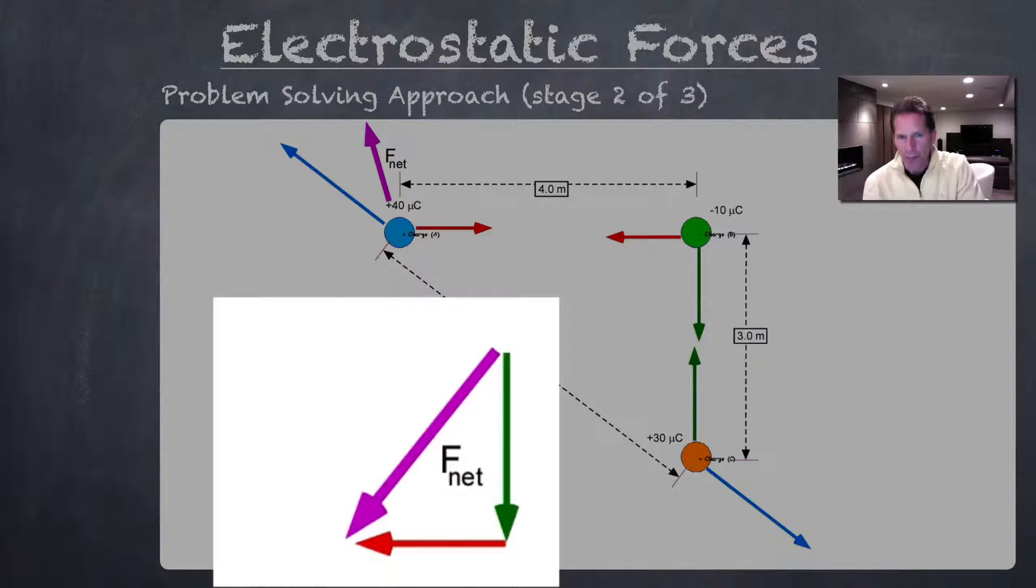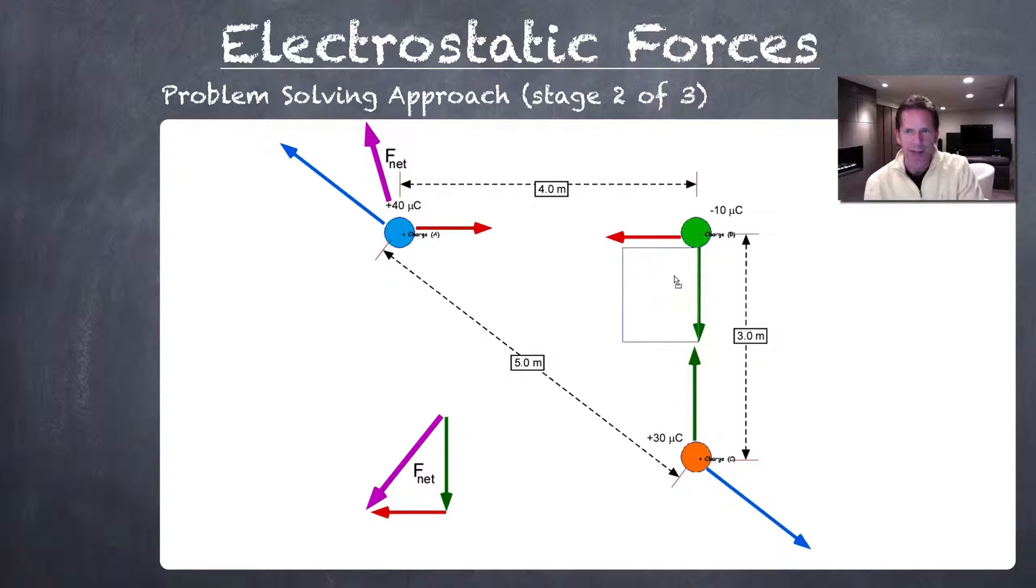That net force vector will move onto the diagram. Just as a reminder, that's the direction we would expect the negative 10 microcoulomb charge to move or accelerate, should it be released.